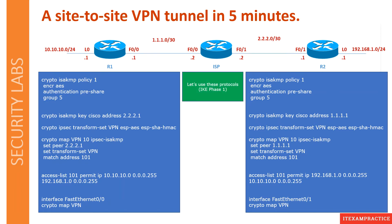We start with IKE Phase 1. Here is something called a crypto policy. We want to specify what we are going to use to negotiate this phase. For encryption we're going to use AES — Advanced Encryption Standard. For the pre-shared key, it's essentially a password. And Diffie-Hellman group 5 is for key exchange. Then we need to authenticate — we specify our key, in this case it's 'cisco'.